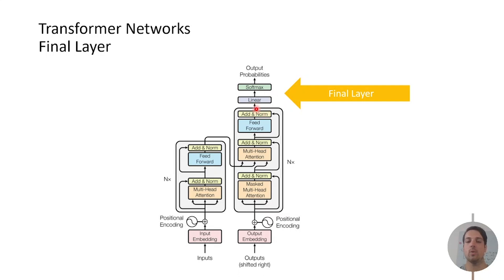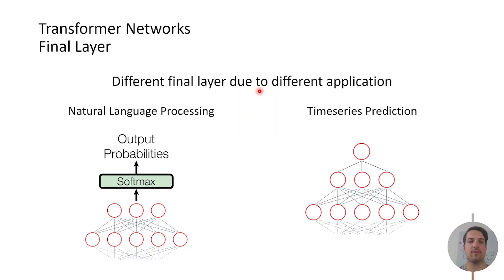At the end of the decoder we have a final layer. This final layer is different due to different applications. For example if we tackle natural language processing problems we have a linear layer or dense layer at the end and then the outputs are put into a softmax function which calculates the probabilities for the next word in the target sequence.